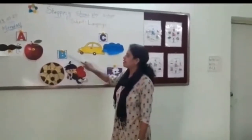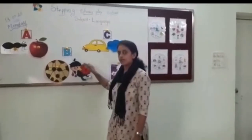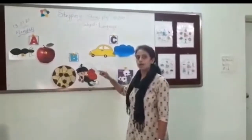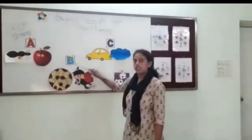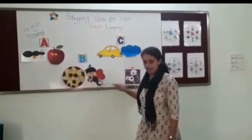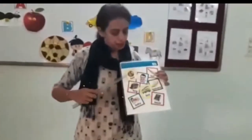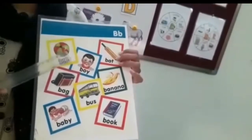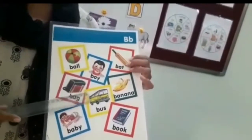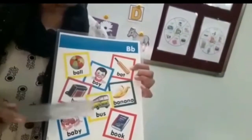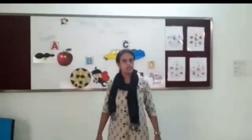Now we will see letter B. What is the sound of letter B, children? B says B. B for Ball, B for Butterfly, B for Bag, B for Baby, B for Boy, B for Bus, B for Bait, B for Banana and B for Book. These are the objects of letter B.